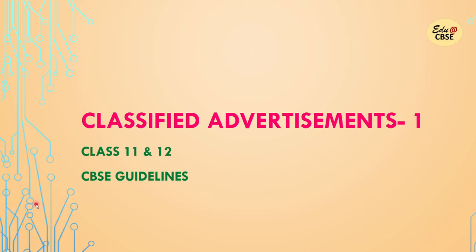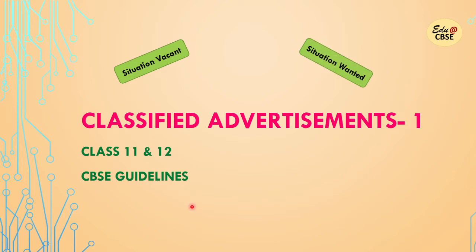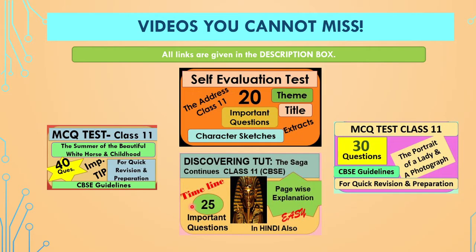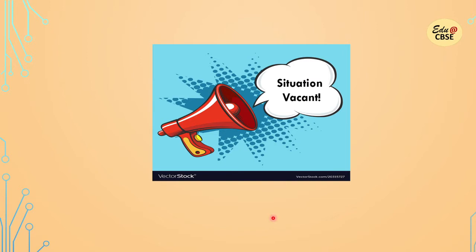There are a number of categories under classified advertisements. This is part one of the video in which I'll be discussing the classified advertisements for situation vacant and for situation wanted. Before we go on with the topic, you need to revise these videos — take the MCQ tests, the self-evaluation test, and watch the video for page-wise explanation. All the links are given in the description box. Now let's come to today's topic: the situation vacant.